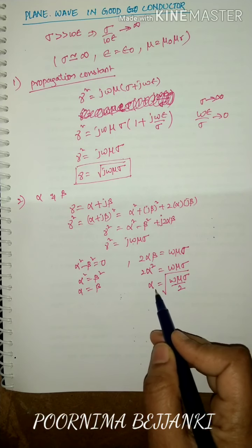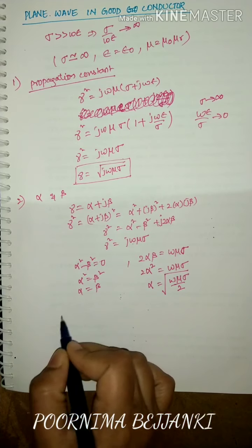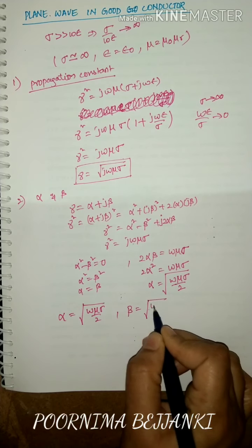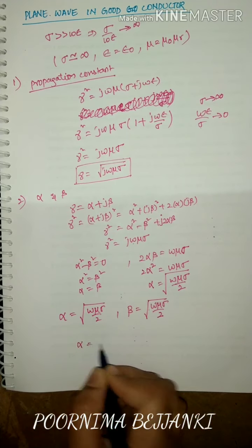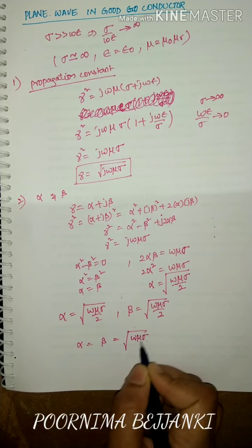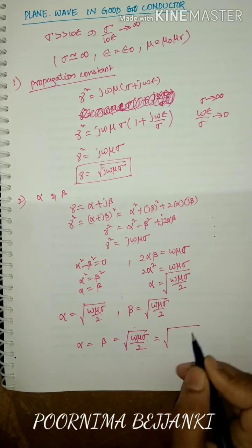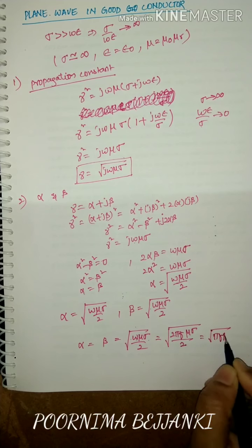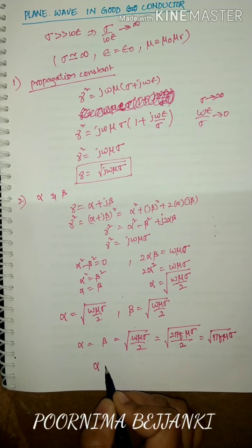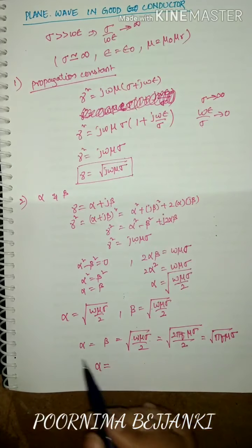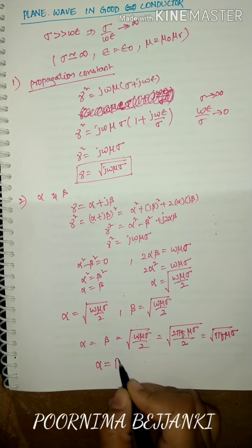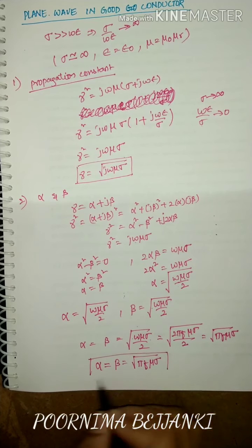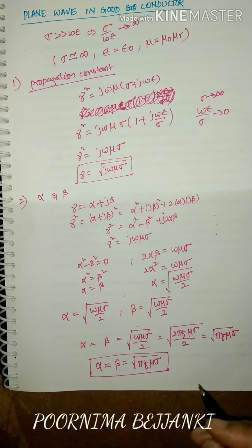For a good conductor, attenuation constant alpha equals phase constant beta equals root of omega mu sigma over 2, which can be further simplified as root of pi f mu sigma. So the final expressions are: alpha equals beta equals root of pi f mu sigma. Now let us derive the expression for intrinsic impedance.